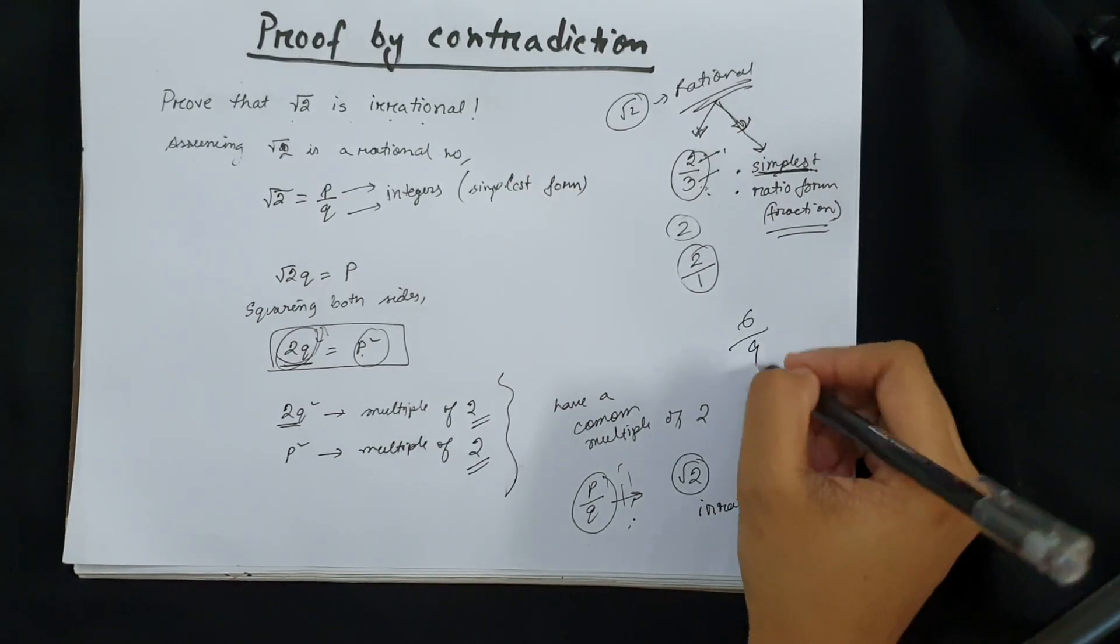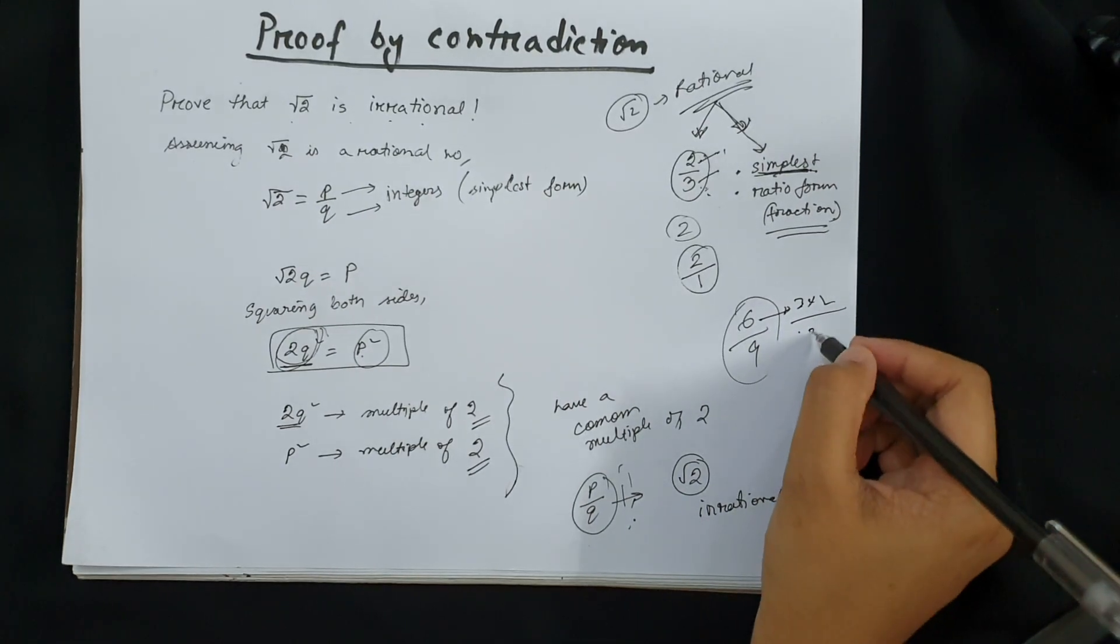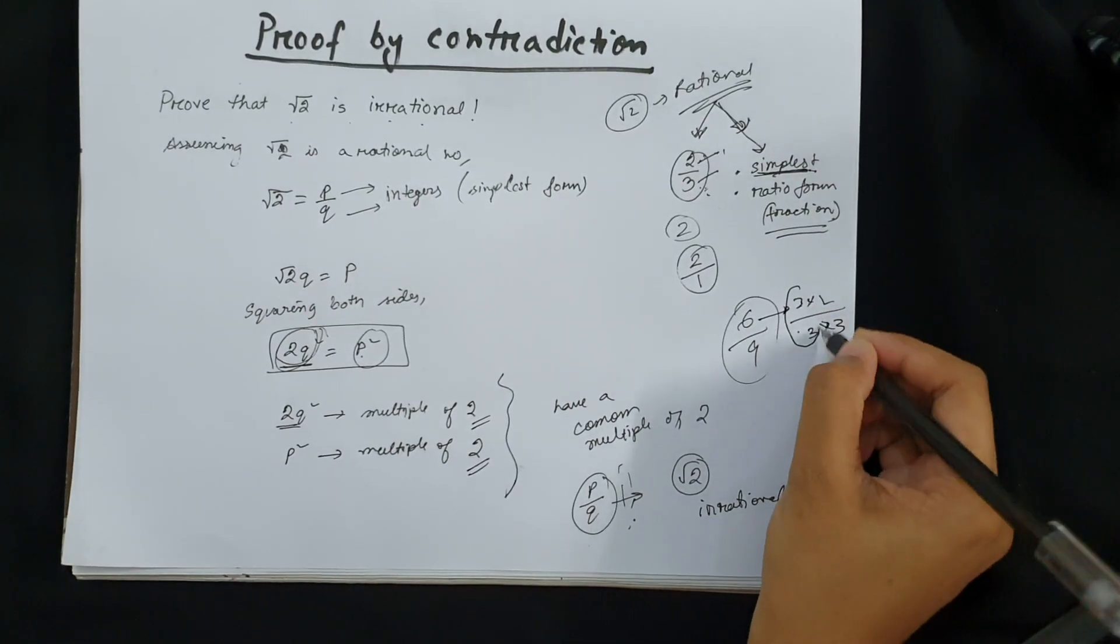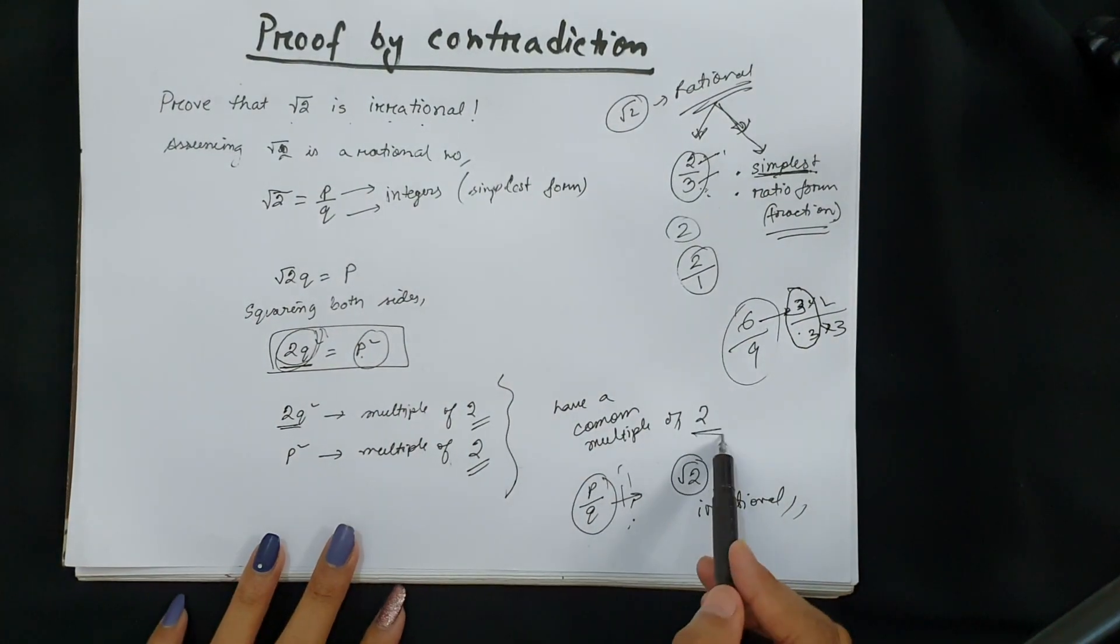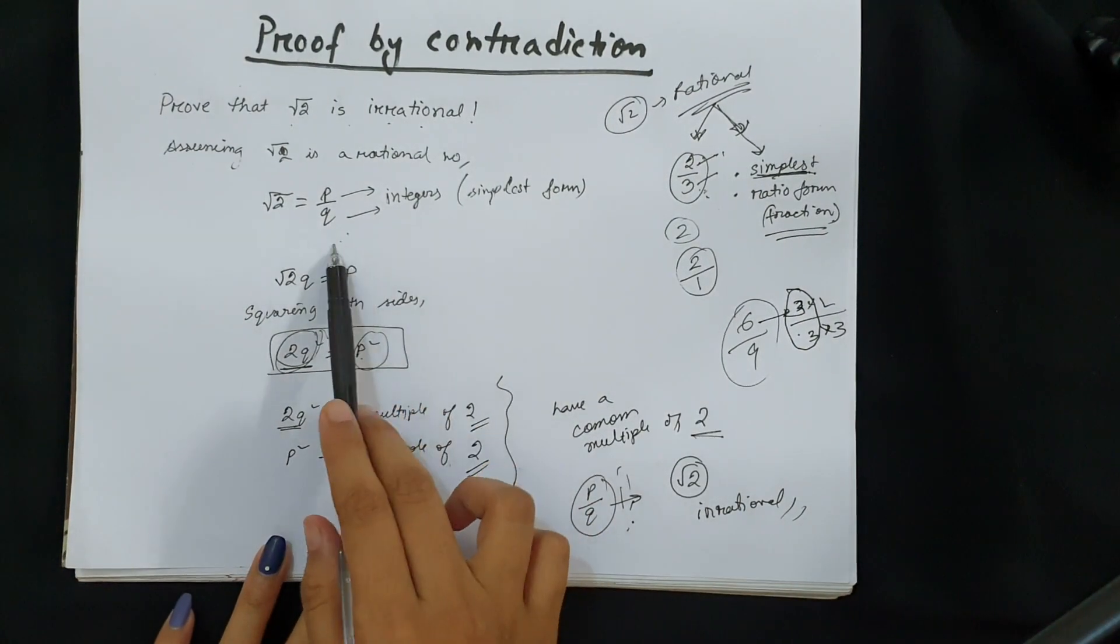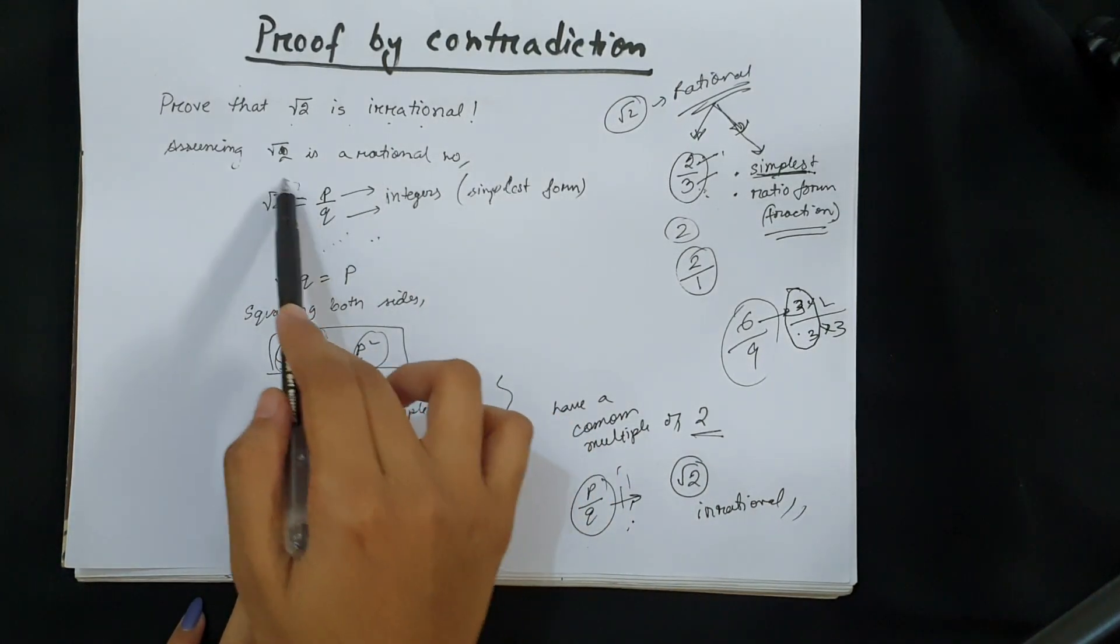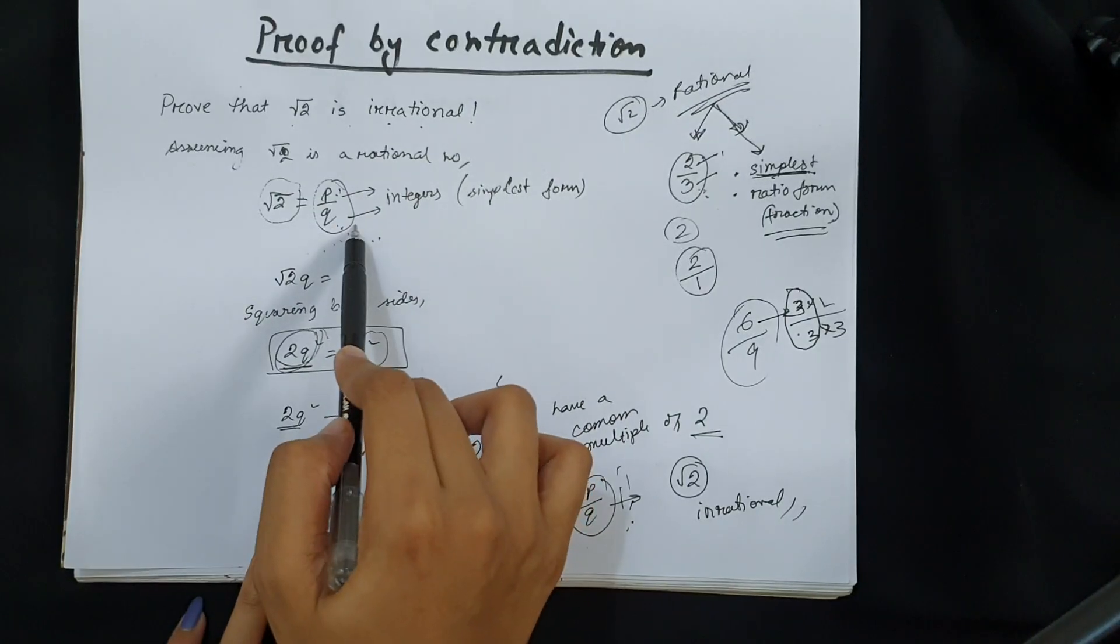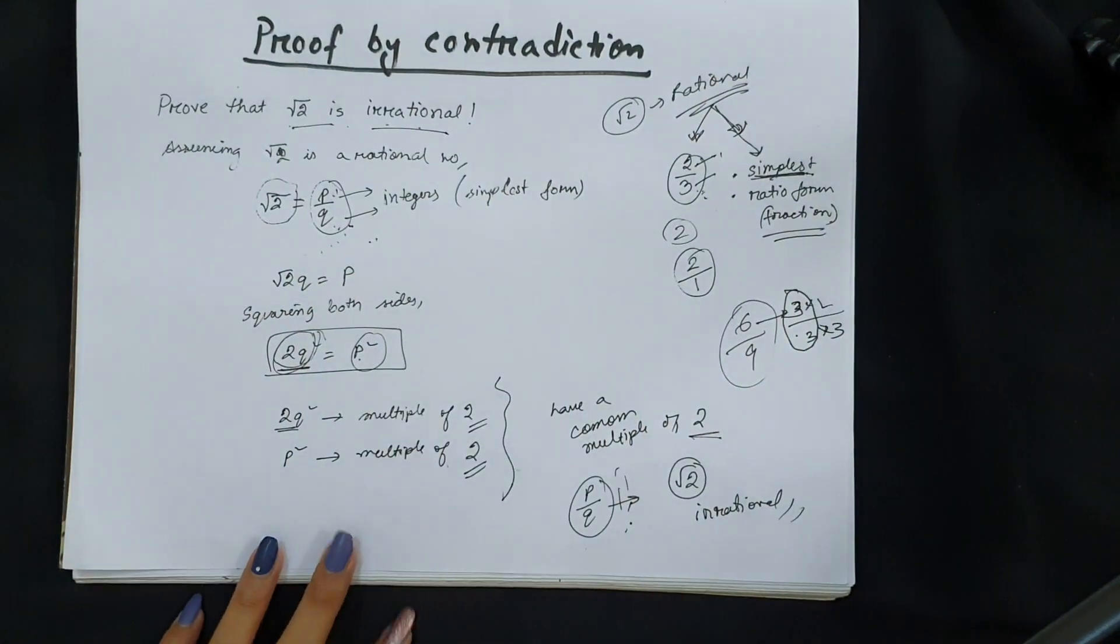Which is 3. So since we have a common multiple of 2, p/q was not in their simplest form, that means we cannot assume that p/q gives you a rational number. By that we can conclude that √2 is an irrational number.